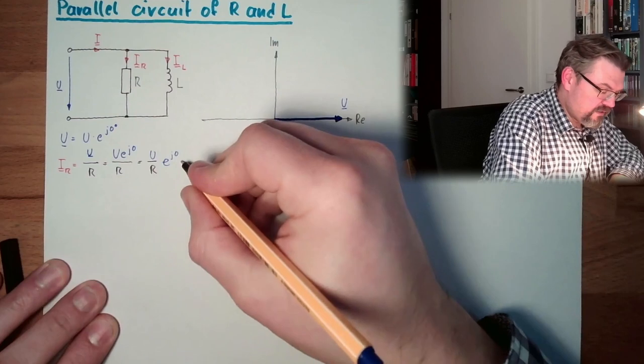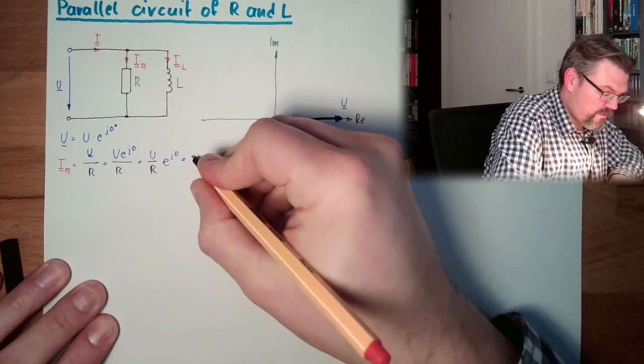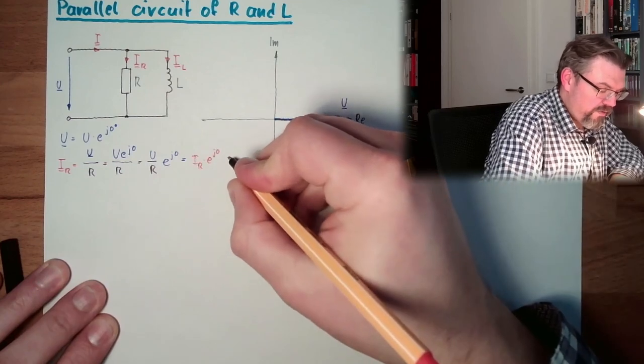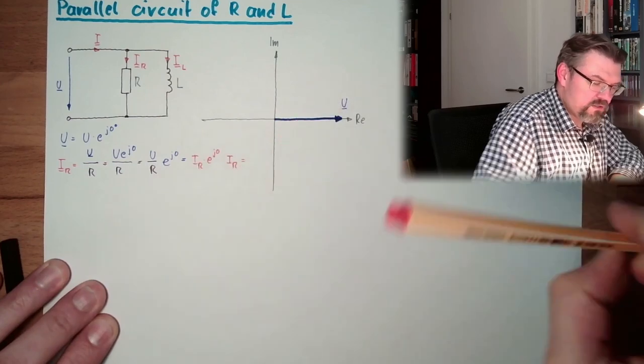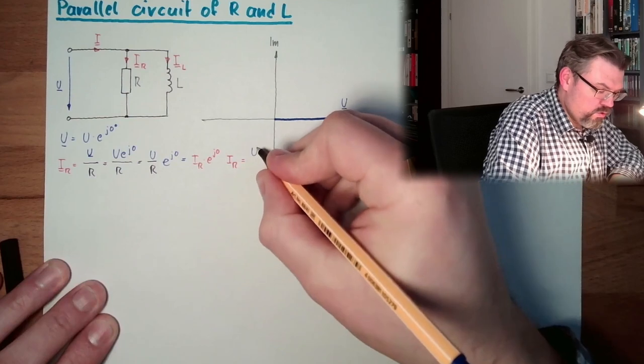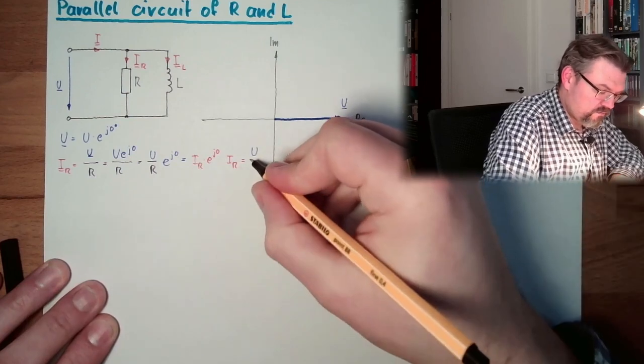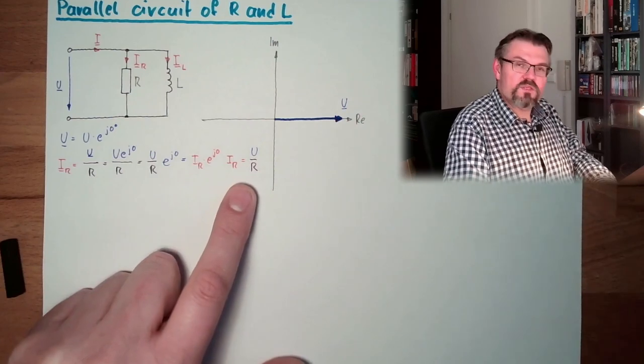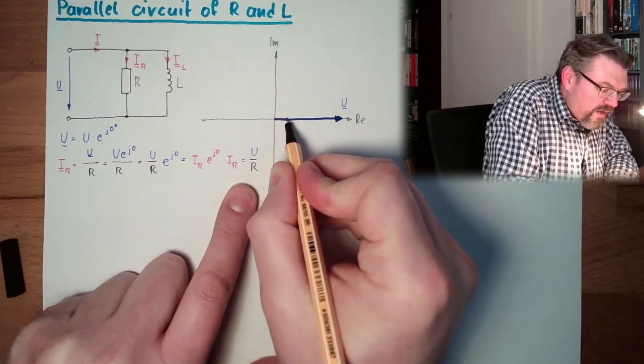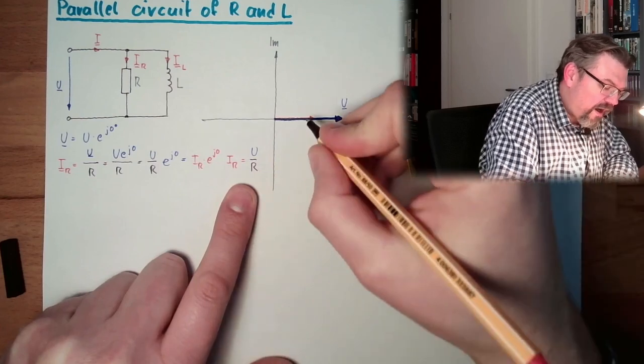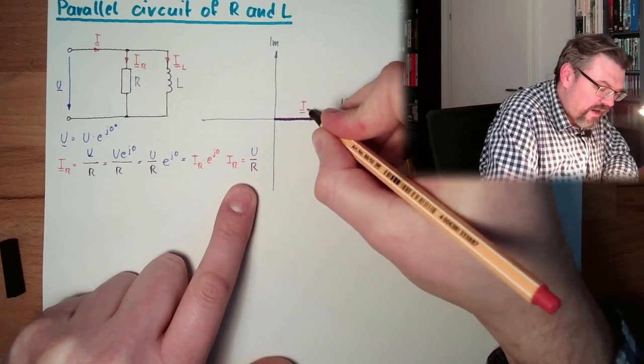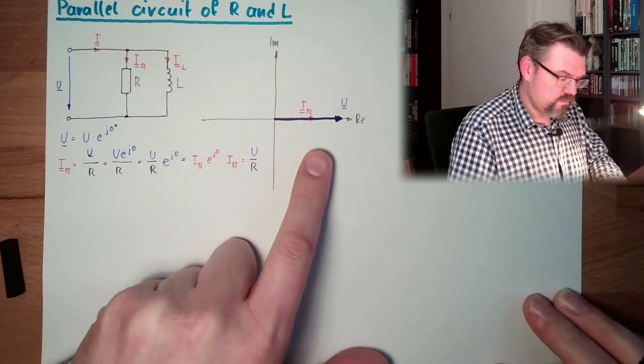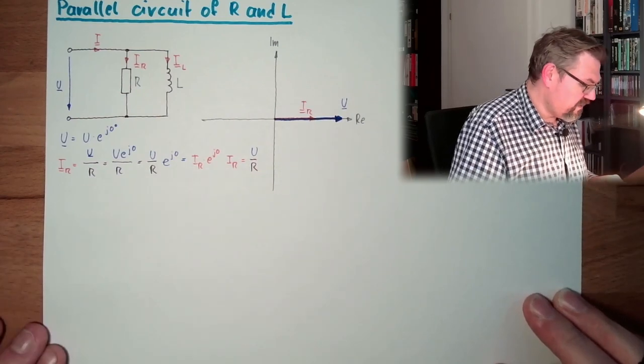Which is U divided by R. This is the absolute value, so it should not be a surprise that we have U divided by R. Here IR, and this IR is in phase with U. So this is in phase with U, and we are here.